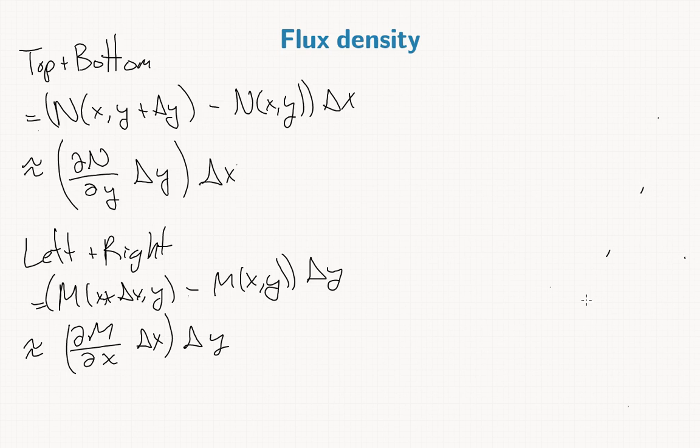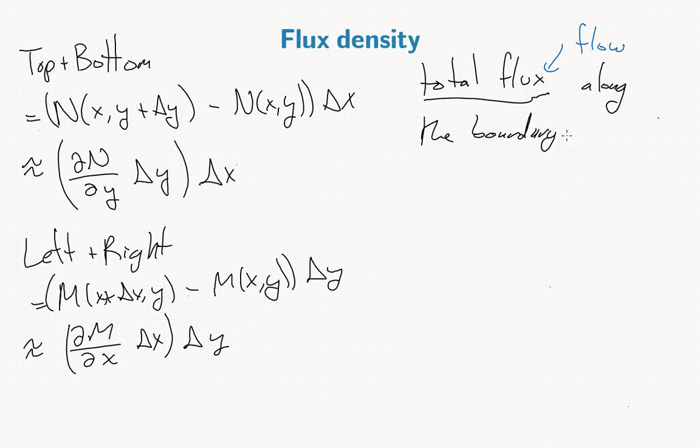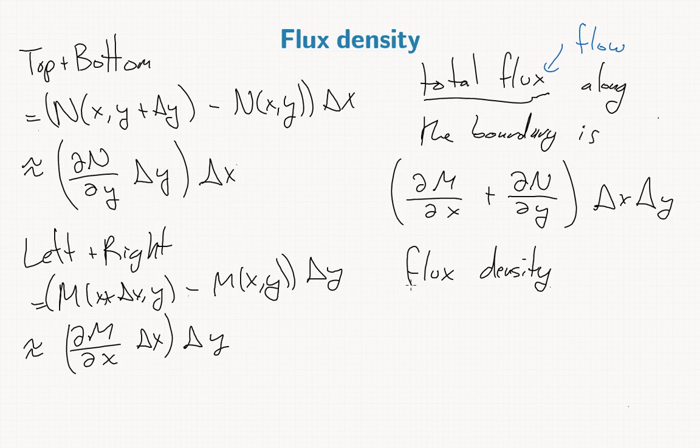All right, so then we add these together. So the total flux—flux is the Latin word for flow—along the boundary is the sum of these two things: del M by del x plus del N by del y, delta x delta y. And then the flux density, or flux per unit area, is what we get when we divide this expression by the area delta x delta y.